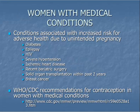Avoiding unintended pregnancy is especially important for patients with certain medical conditions. The safest choice for contraception in patients with underlying medical conditions should be provided. The World Health Organization has published comprehensive tables of medical conditions and personal characteristics that can guide contraceptive choice. These tables can be found online.